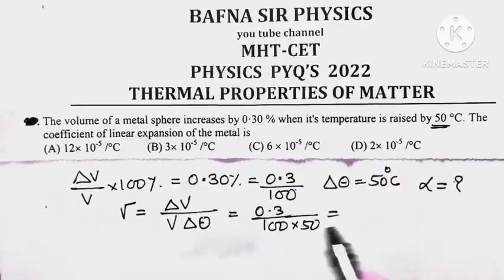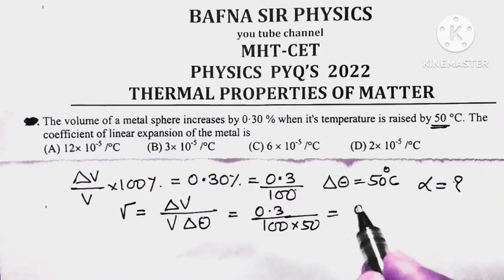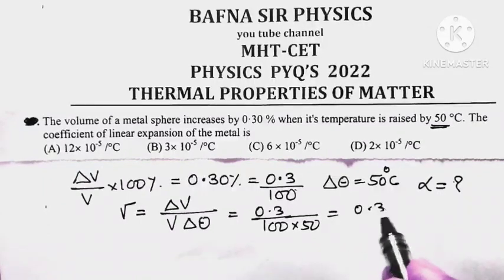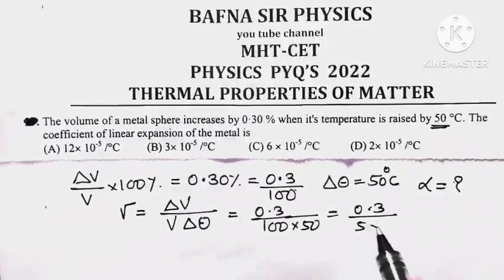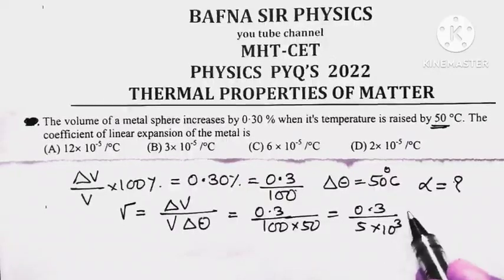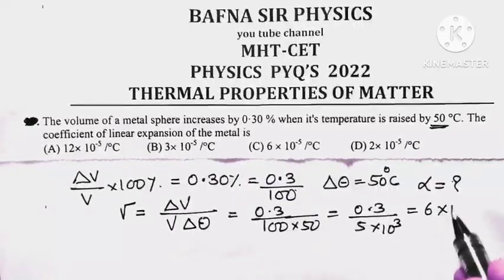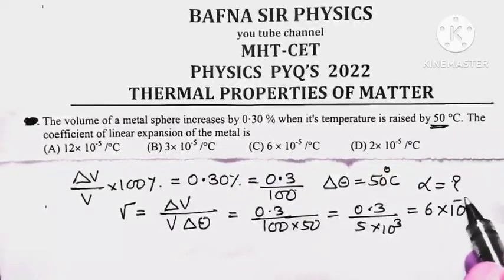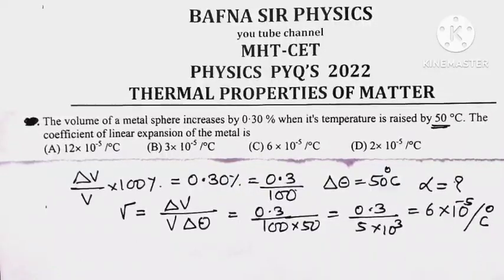So gamma equals 0.3 upon 100 into 50. If you calculate it, that is 0.3 upon 5 into 10 to the power 3, which equals 6 into 10 to the power minus 5 per degree centigrade.